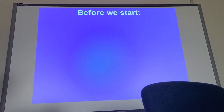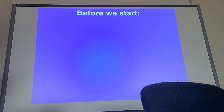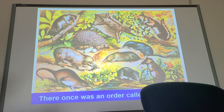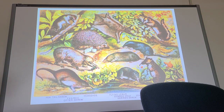Before we start, I want to talk about something you may run into if you do interpretive work with state biologists. A long time ago, there was a mammal order known as Insectivora. It makes sense — similar to Carnivora. Insectivora contained all sorts of things — and the tenrecs, shrews, and others were in this order.